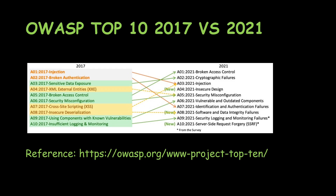Broken Access Control — which we are going to look at today — has jumped from position 5 to position 1; the name stays the same but it moved up five positions. Insecure Deserialization is now part of Software and Data Integrity Failures. Using Components with Known Vulnerabilities, now called Vulnerable and Outdated Components, jumped up three positions to number 6 in 2021. Insufficient Logging and Monitoring moved one position up to Security Logging and Monitoring Failures.